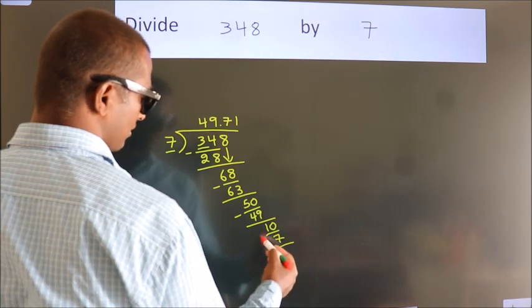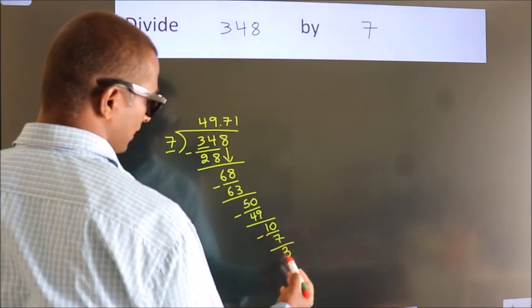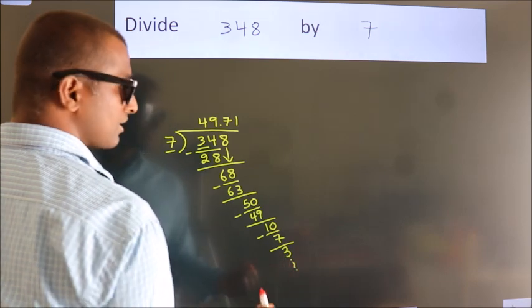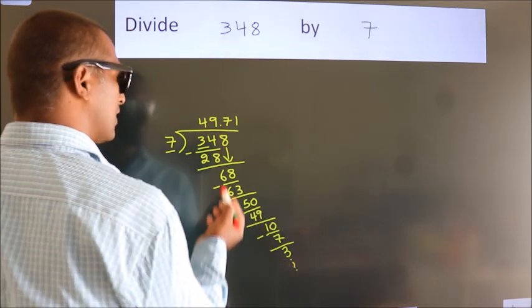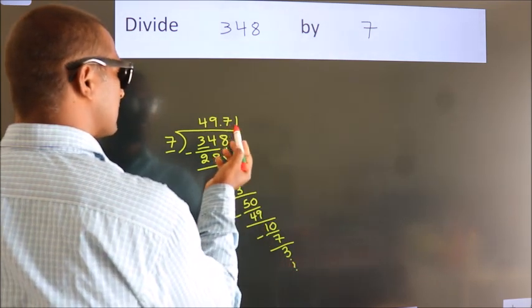Now we subtract. We get 3. And the division continues. It is enough if we do up to 2 decimal places.